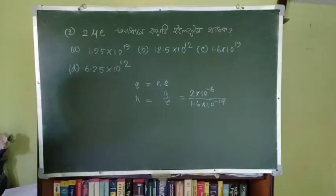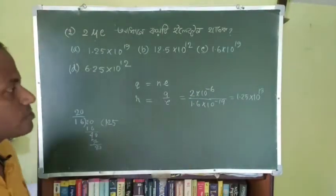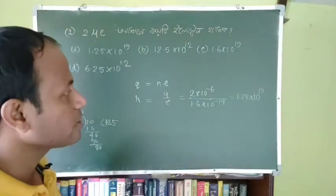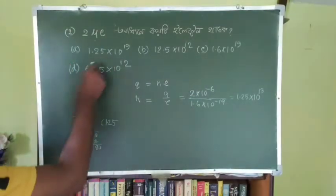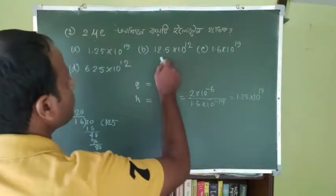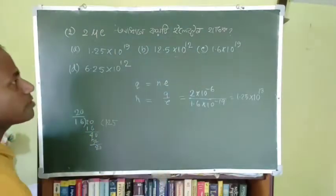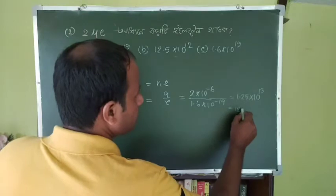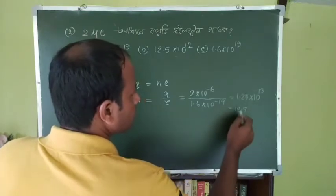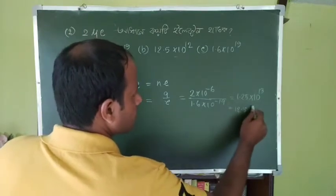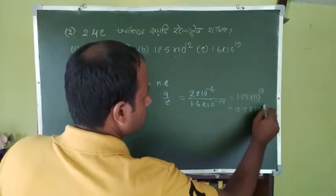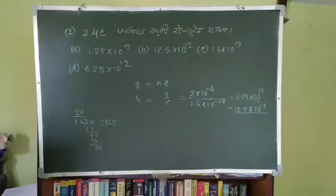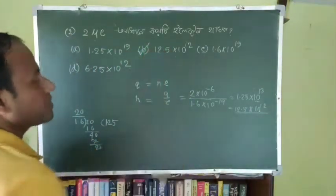For this question, the answer involves 1.25×10²² electrons. The option is 1.25×10²² times 19. That gives approximately 12.5×10²², and by adjusting by a factor of 10, the answer is 12.5×10²². This option is correct.